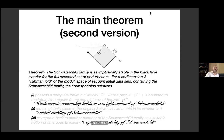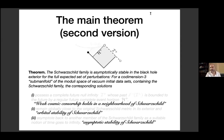Label the components of the theorem: the first statement is weak cosmic censorship restricted to a neighborhood of Schwarzschild — far-away observers live forever. The second is orbital stability of Schwarzschild. The last is asymptotic stability of Schwarzschild — only for this last statement is the codimension-three restriction necessary. However, in nonlinear stability results, the only way to prove one and two is by proving three, so you should think of all three as a packet.